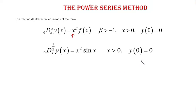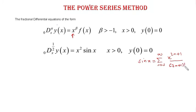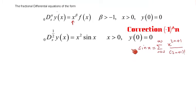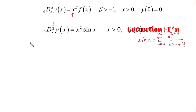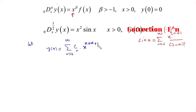We know that the series representation of sin(x) is the sum from n=0 to infinity of x to the power 2n+1 over (2n+1)!, which converges over the entire real line. To solve this, we assume y(x) has a power series representation: y(x) = sum from n=0 to infinity of constant c_n times x to the power n plus alpha plus beta.